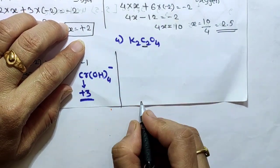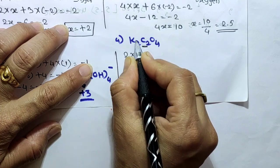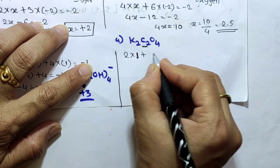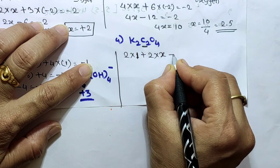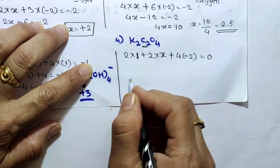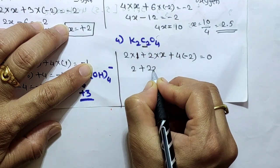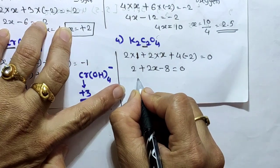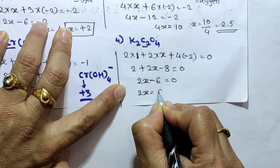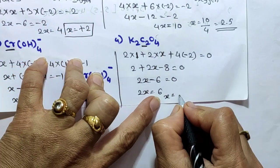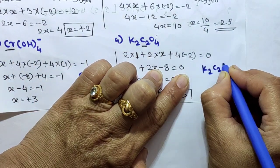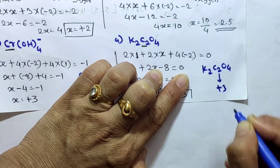Next example: K2C2O4. Find the oxidation state of carbon. We write: 2×(+1) + 2x + 4×(-2) = 0. That is 2 + 2x - 8 = 0, so 2x - 6 = 0, therefore 2x = 6, and x = +3. So carbon has oxidation state +3 in K2C2O4.